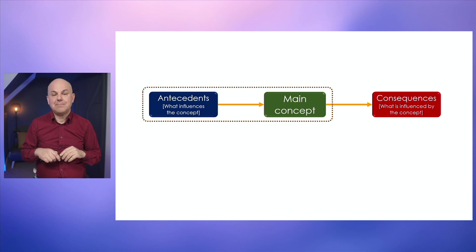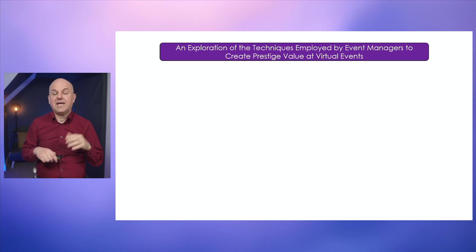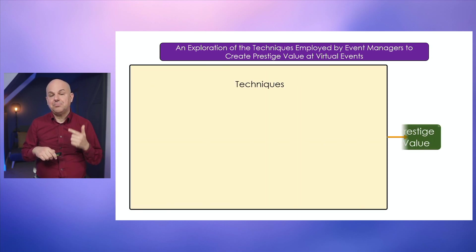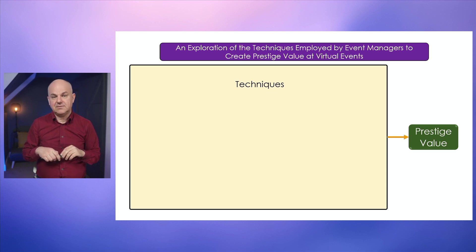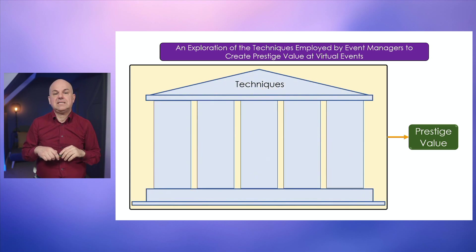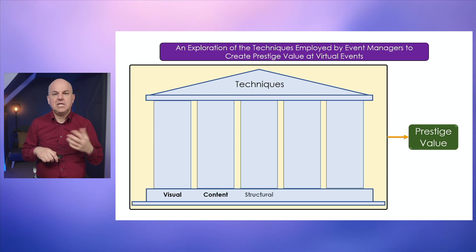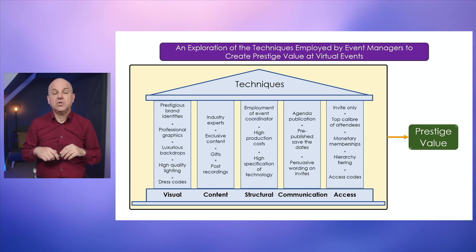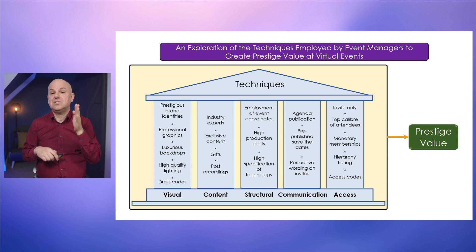The first qualitative conceptual framework example focuses on the relationship between antecedents and the main concept, from a dissertation entitled 'An Exploration of the Techniques Employed by Event Managers to Create Prestige Value at Virtual Events.' The student sought to understand what influences the creation of prestige value, and identified five categories of techniques — represented through a Roman temple metaphor with pillars: visual, content, structural, communication, and access techniques. Inside each pillar, she included the individual techniques belonging to each category.